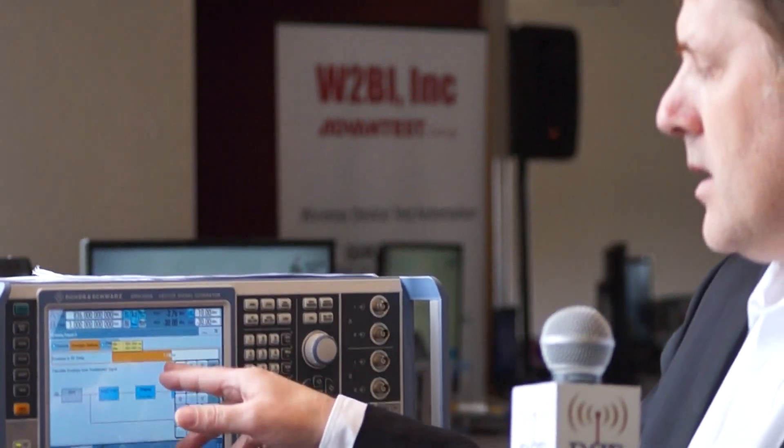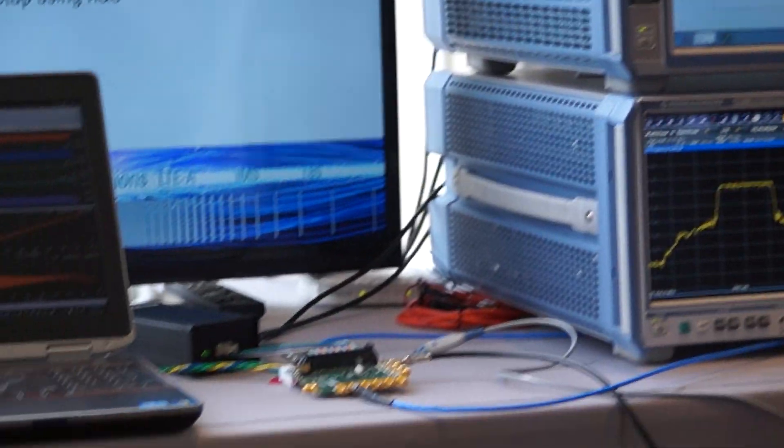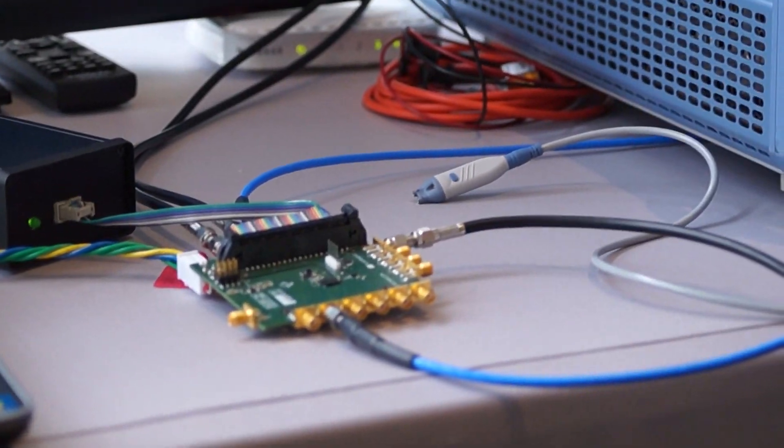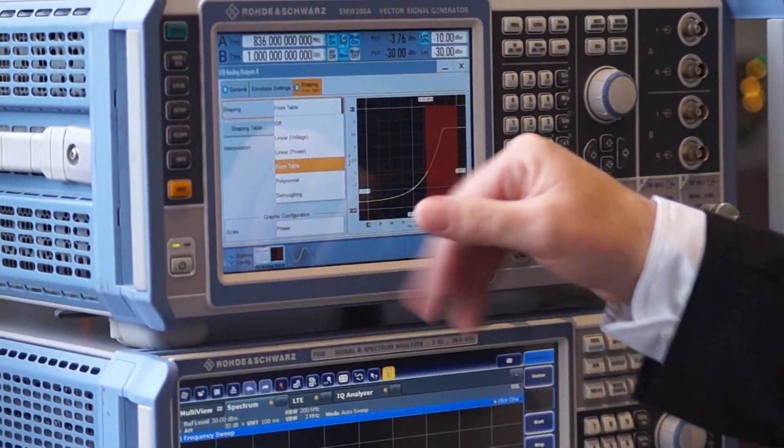The other thing is we apply the ability to change the delay between the RF and the envelope signal at the device. So, this is a critical parameter for getting envelope tracking to work properly. Then we apply a shaping table, lots of different forms of shaping table that you can import or draw your own.